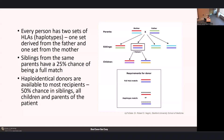Siblings from the same parents have a 25% chance of being a full match to one another. As shown in the diagram, our patient has inherited one haplotype from each parent, and unfortunately does not have any full matches among their siblings. One of the next places we can look for a related donor is a haploidentical donor—a patient who shares just one haplotype with the donor. This is available to most recipients: there's a 50% chance of finding one among siblings, and all children and parents of the patient will be haploidentical donors.